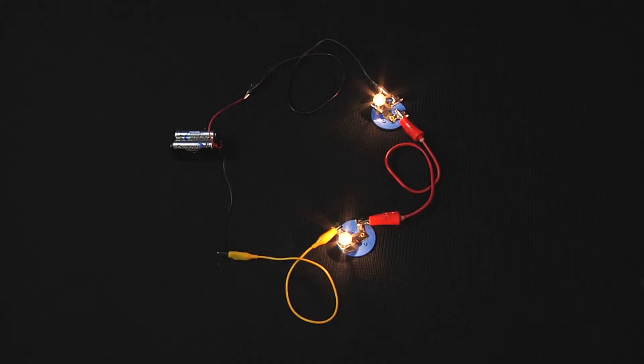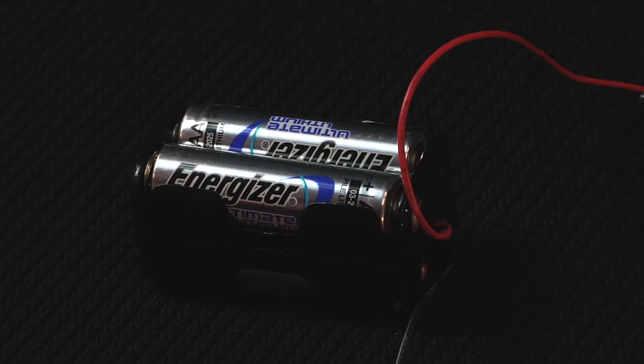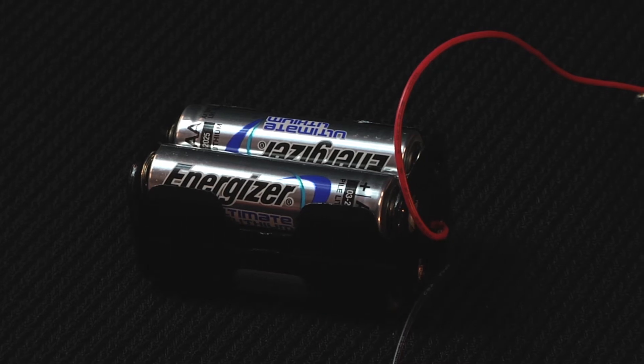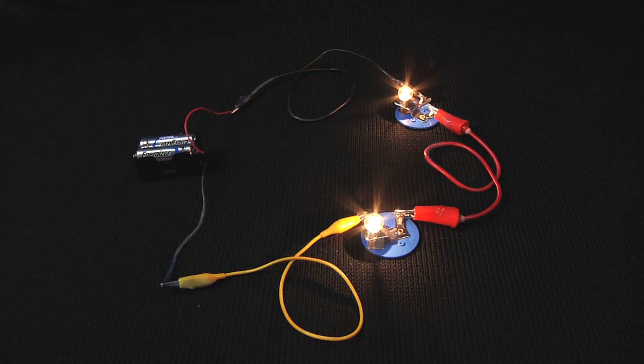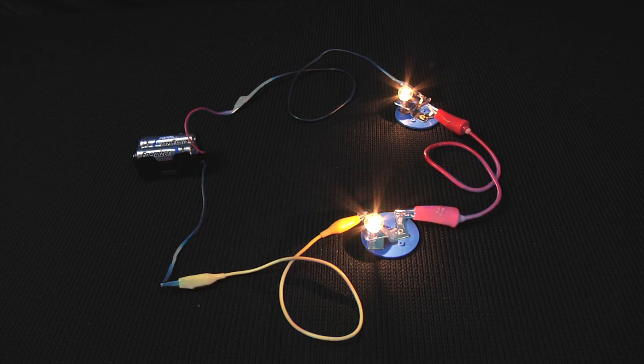In order to keep an electrical current going, there needs to be a source of energy that provides a voltage difference such as a battery. The flow of electricity requires a closed circuit for the electrical current to travel in a loop and return to the voltage source.